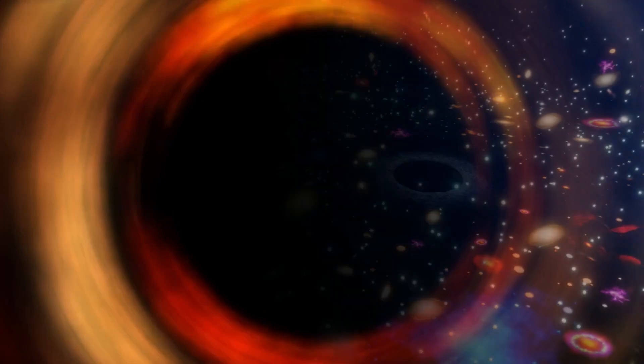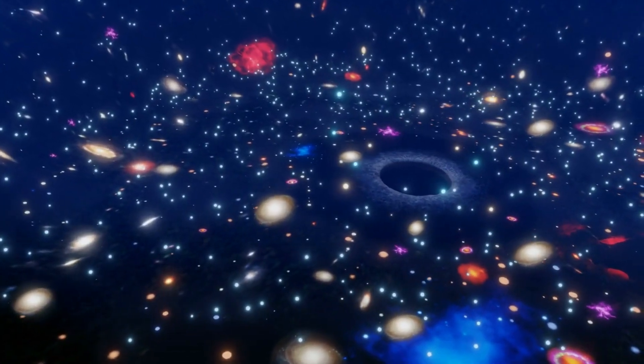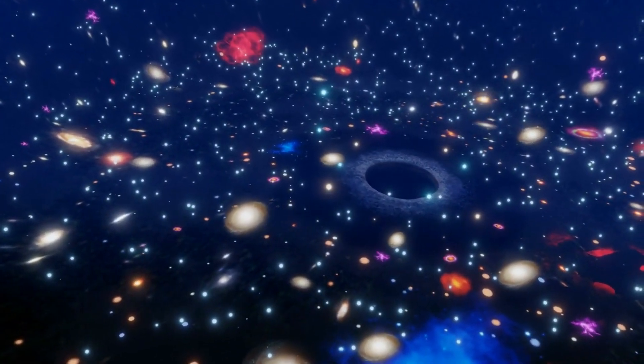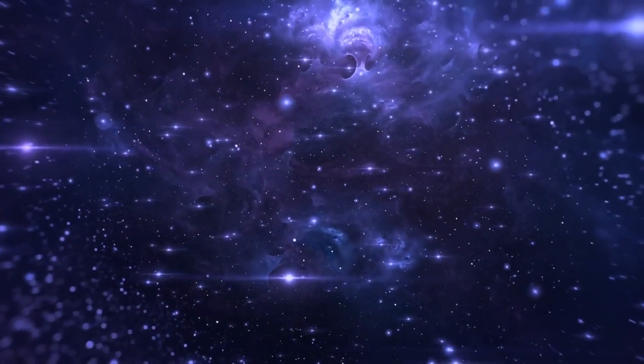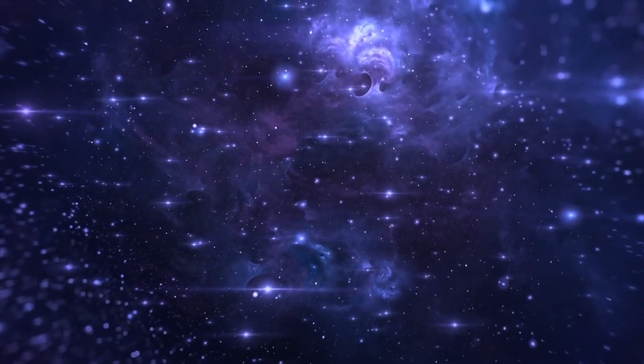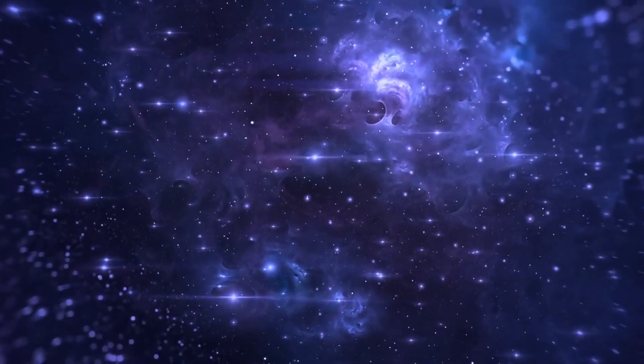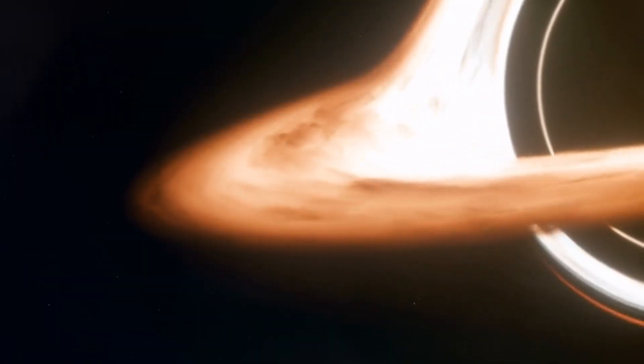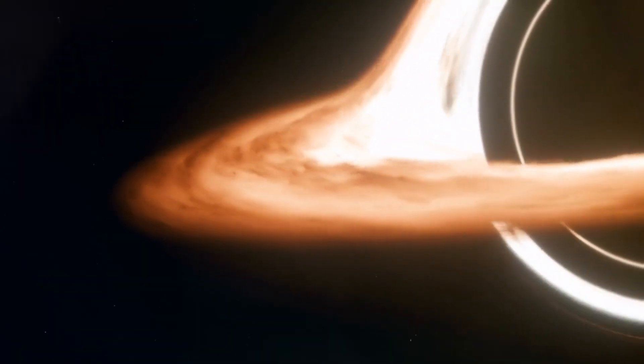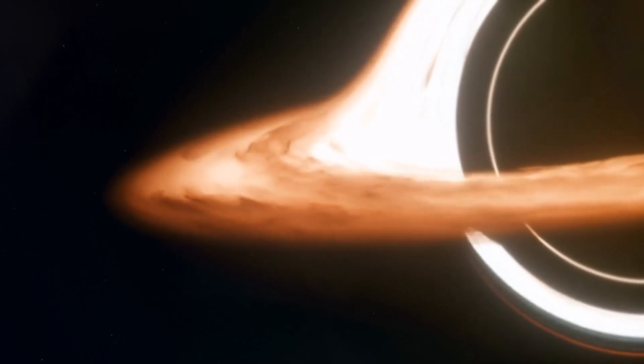In 2019, humanity witnessed a monumental achievement: the first ever image of a black hole, captured by the Event Horizon Telescope. This image provided visual confirmation of black holes, which had been theorized but never directly observed. It depicted the black hole in the center of the galaxy M87, showcasing the shadow of the event horizon against the glowing backdrop of superheated gas. This breakthrough opened new avenues for understanding their nature and behavior.